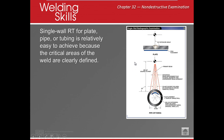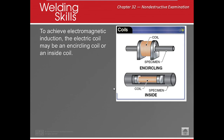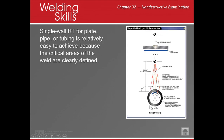For plate or accessible pipe, we use single wall radiography — film placed directly behind and source in front. If we can access the interior of a pipe, we place film inside and shoot toward it. But if we cannot access the pipe interior, we place the film on the outside and shoot through both walls — this is called double wall radiography.